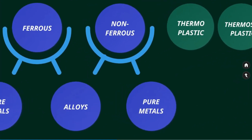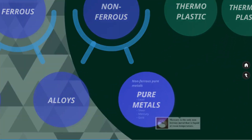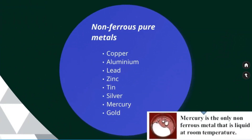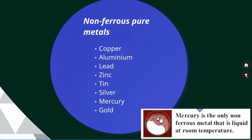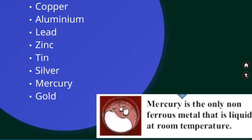All pure metals are non-ferrous elements except iron. Important non-ferrous metals include copper, aluminum, lead, zinc, tin, silver, mercury, and gold.